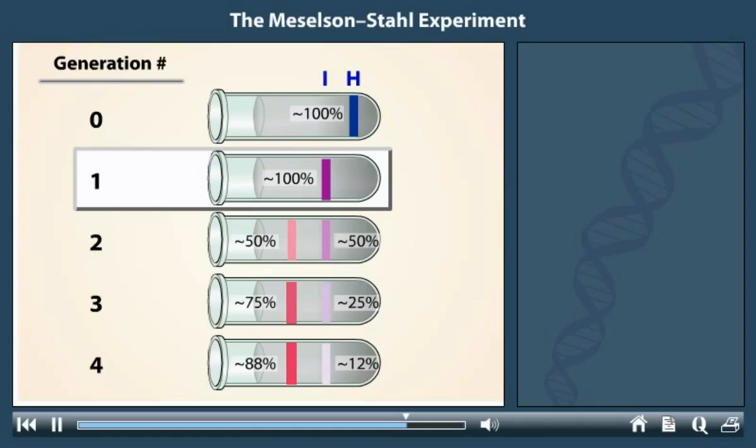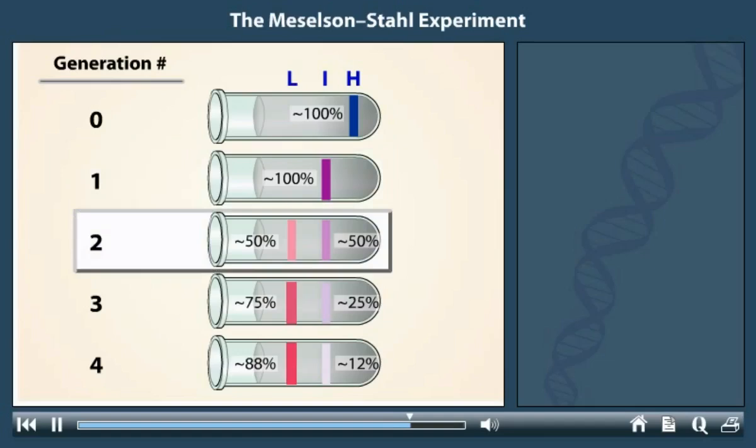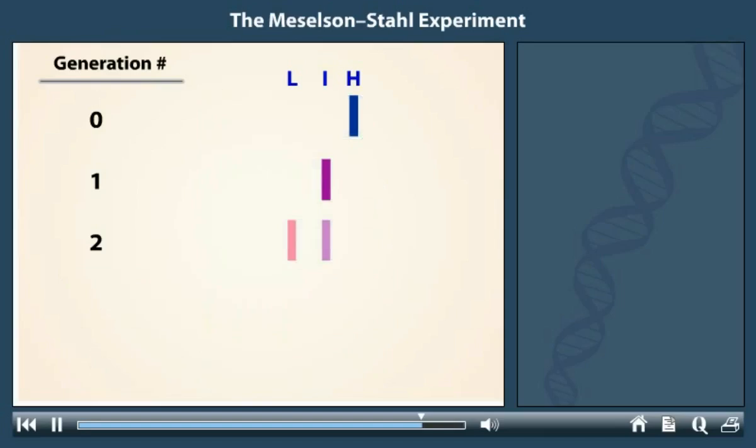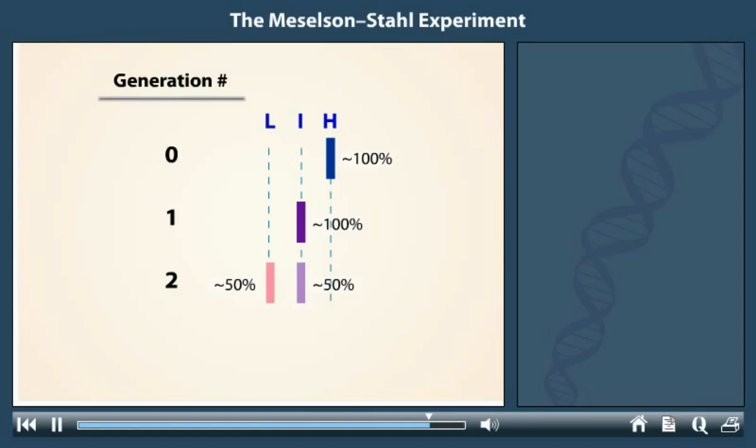After two generations, half of the DNA was light and half was intermediate. After additional generations, more of the DNA was in the light form and less in the intermediate form. Generations 0 through 2 provide enough information to determine which model of DNA replication is correct.